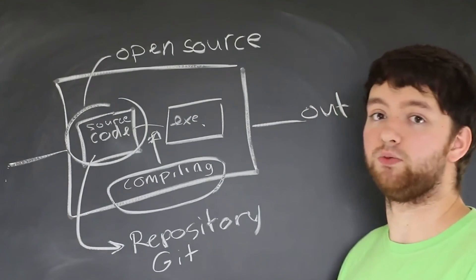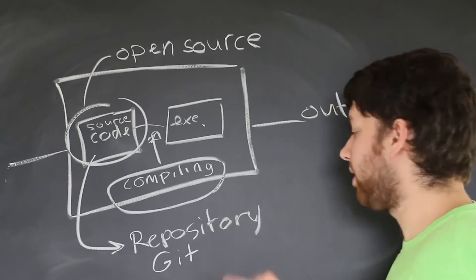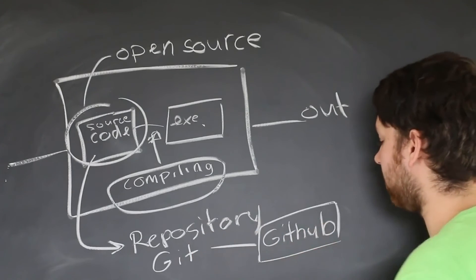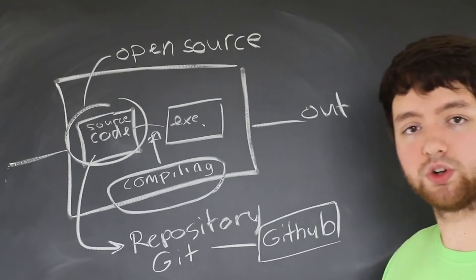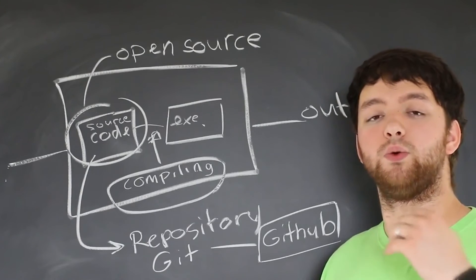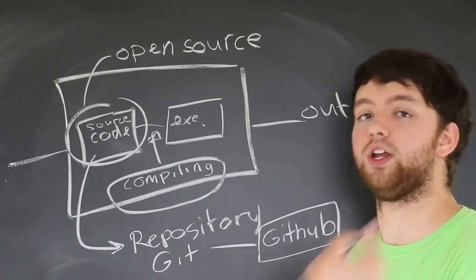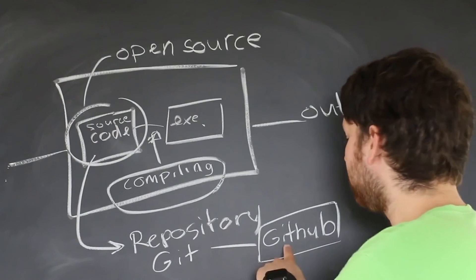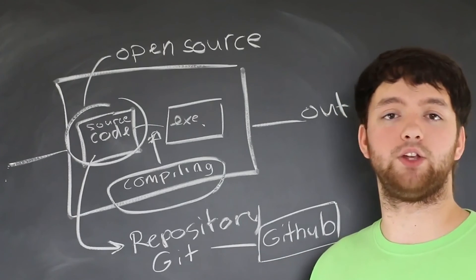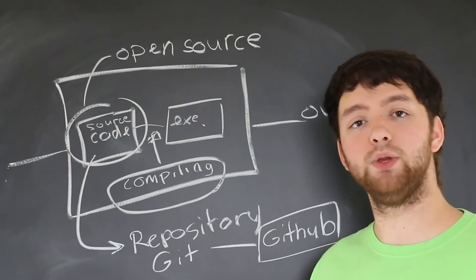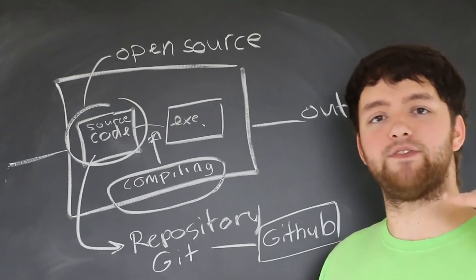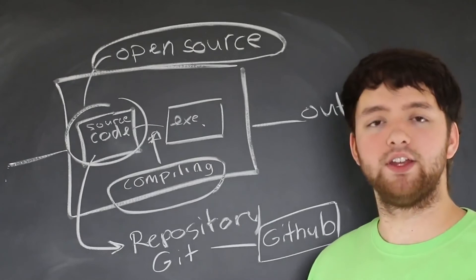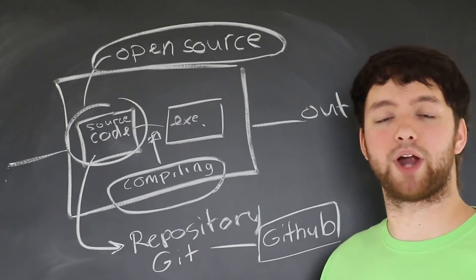This is often done with open source projects. You may have heard of something called GitHub — it's essentially a source code repository where it allows you to store your code in a central location for others to view. On GitHub, you have two options: you can make your source code public or private. If it's public, then your project is open source. If it's private, then it's closed source — proprietary — you're probably selling it and it's your secret recipe for success.